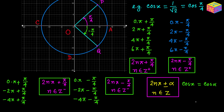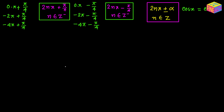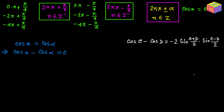First I am going to write the equation: cosine of x equals cosine of alpha, where alpha is a given angle. Bringing cosine of alpha to the left-hand side gives cosine of x minus cosine of alpha equals 0. Now we are going to use the formula for cosine C minus cosine D, which is negative 2 times sine of (C plus D) over 2, times sine of (C minus D) over 2.